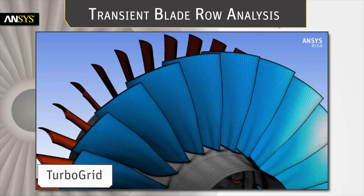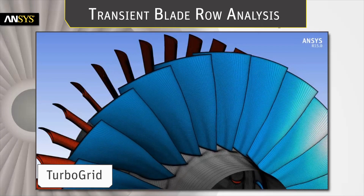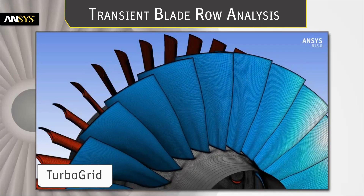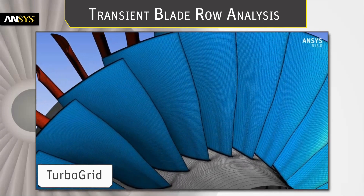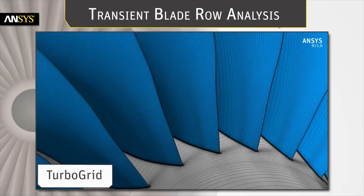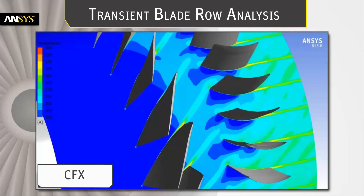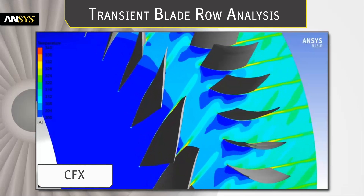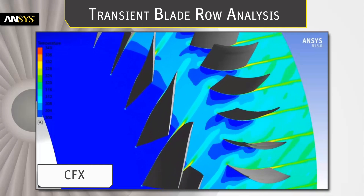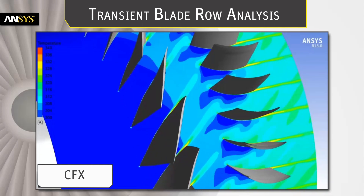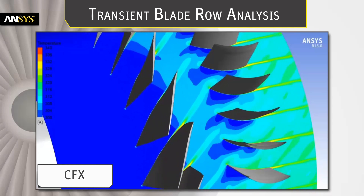For transient blade-row analysis, high-quality meshes are rapidly generated using TurboGrid. ANSYS CFX simulates the transient aerodynamics using only a sector of each blade-row, providing accurate results up to 15 times faster for the case shown here, and allowing engineers to perform higher-fidelity simulations within the design process.